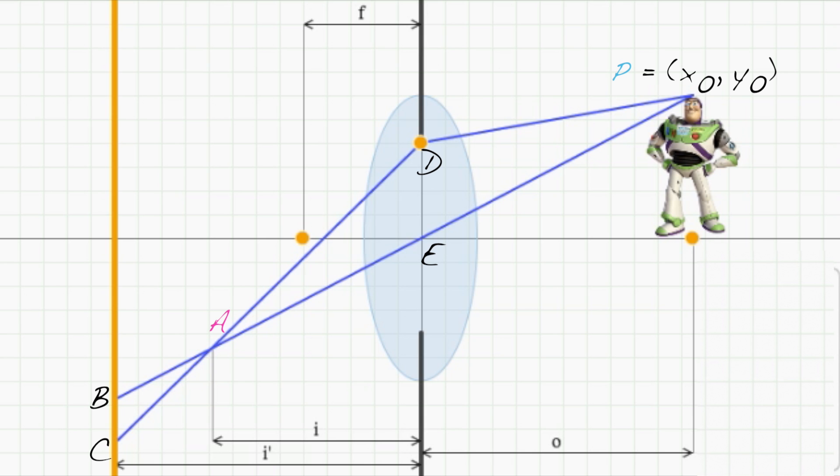Remember, we need a formula that tells us what BC is in terms of things we know, like the focal length of the lens, the size of the aperture, and the distance to our object P.